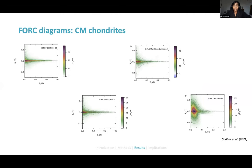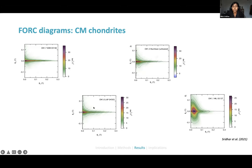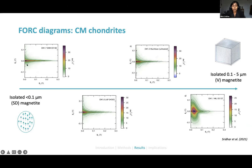For the CM chondrites — a really interesting group because they are very aqueously altered but also show a range of aqueous alteration — I've given a few FORC diagrams here. On the left are less aqueously altered samples and on the right are more aqueously altered ones. You can see a mixture of single domain FORC diagrams with a long clear ridge along the x-axis, and more stereotypical pirate-hat shapes that represent vortex magnetite. So we're seeing a range of magnetite grain types present in the CM chondrites.